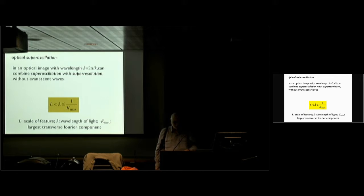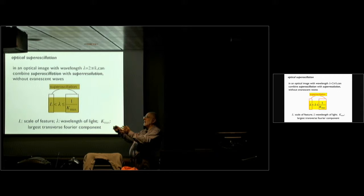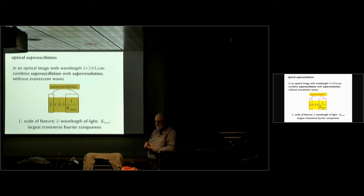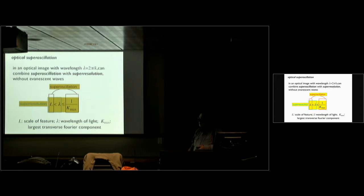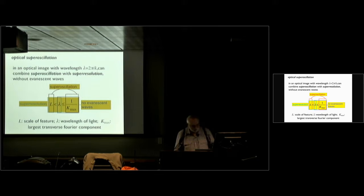You're also interested in the sideways variation because that will determine whether it's super-oscillatory or not. So there are some interlocking inequalities. Super-oscillation means that the feature you want to understand is smaller than the length corresponding to the largest transverse wave number in the lateral field — that's the band limitation. Super-resolution means the thing you're looking at is smaller than the wavelength. And no evanescent waves means the wavelength is smaller than the reciprocal of this band-limited transverse K.